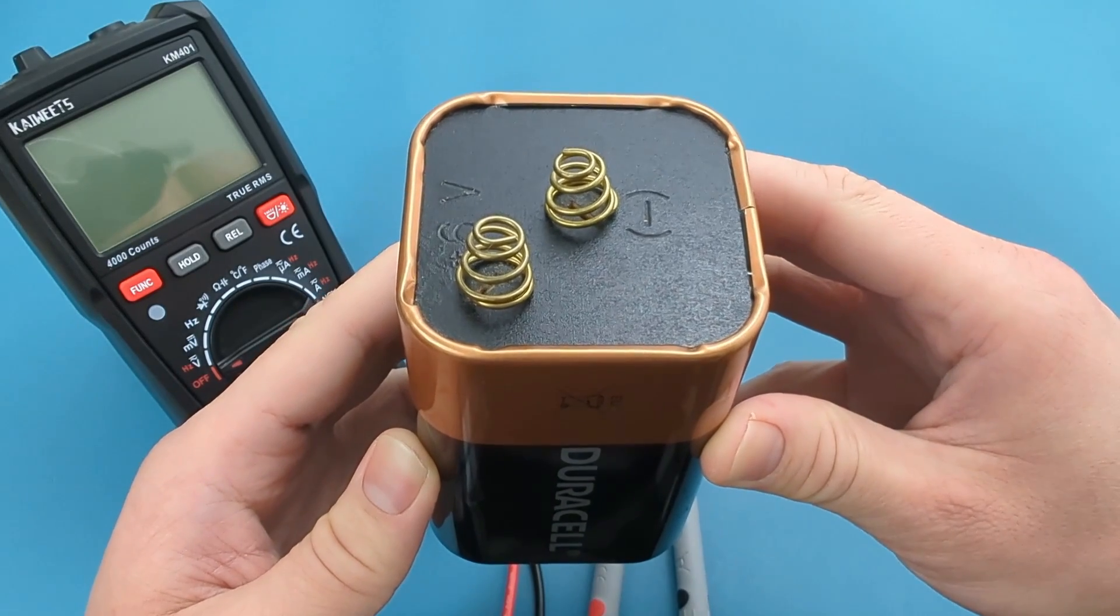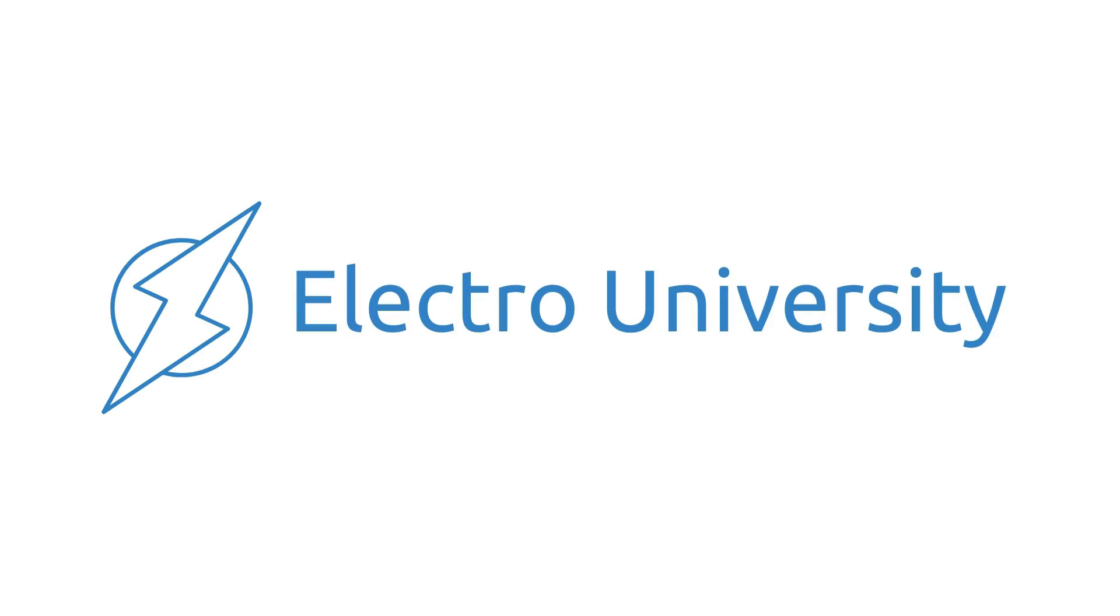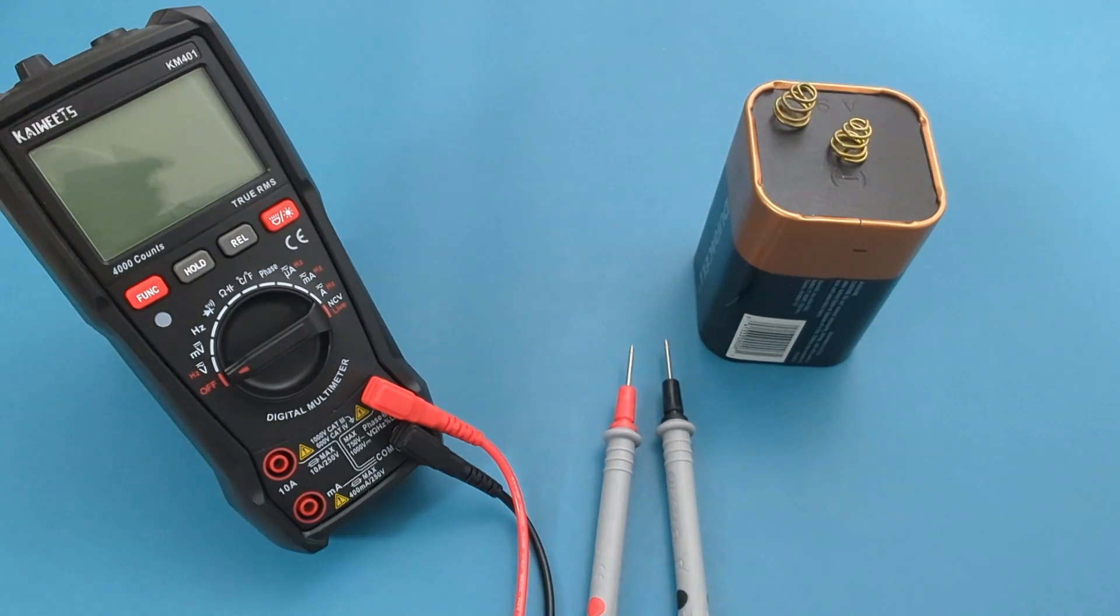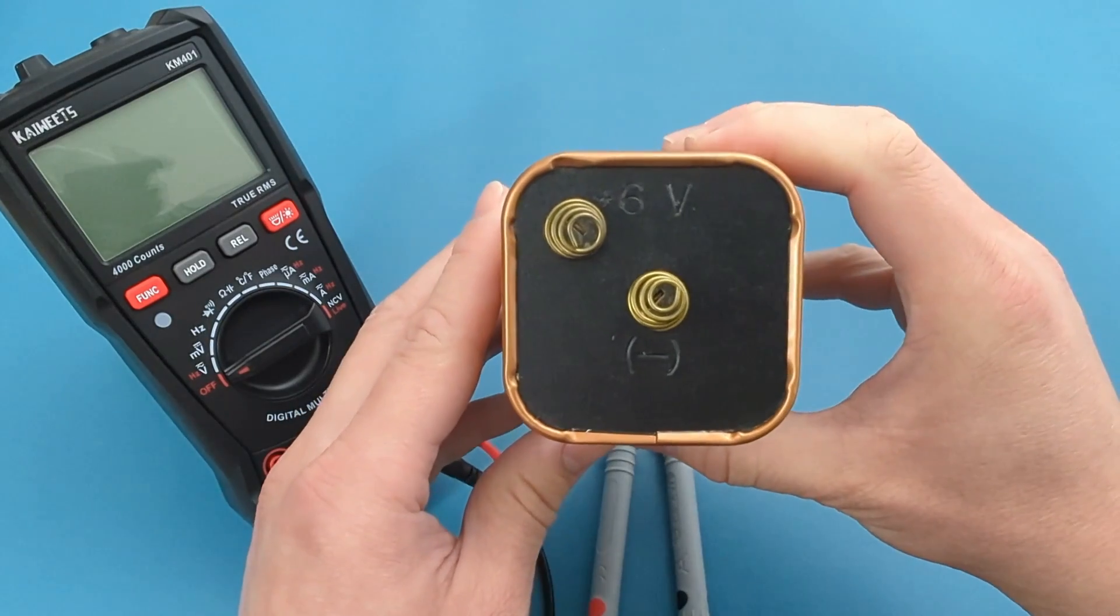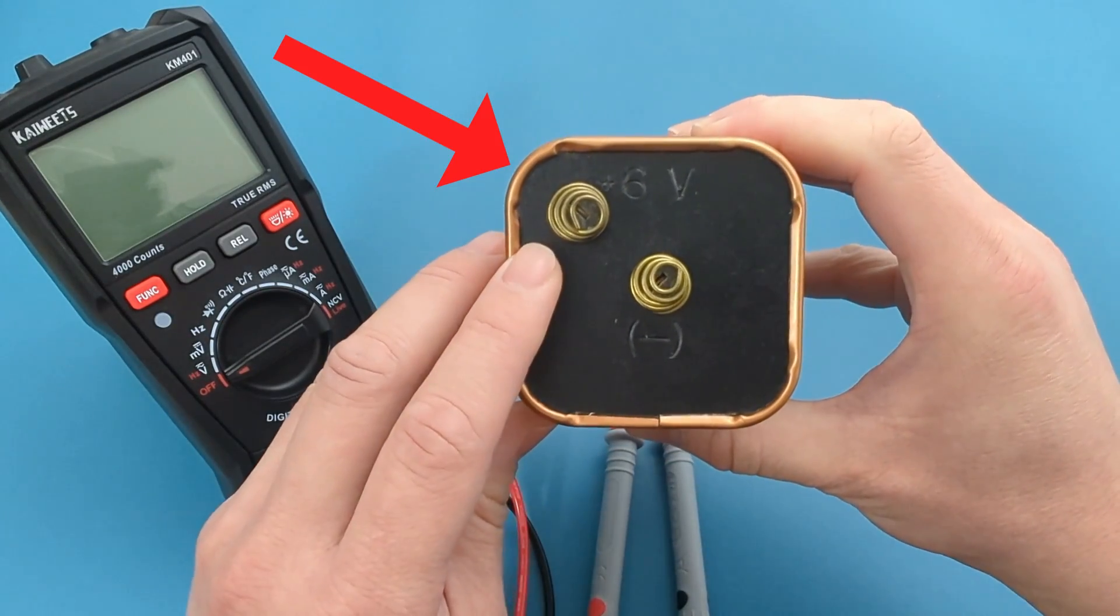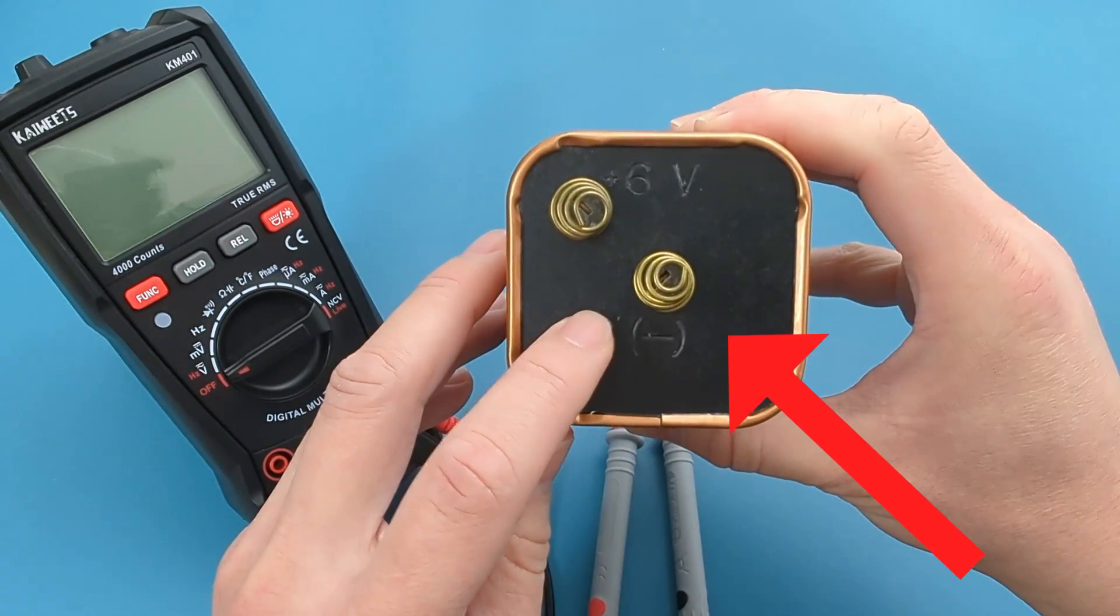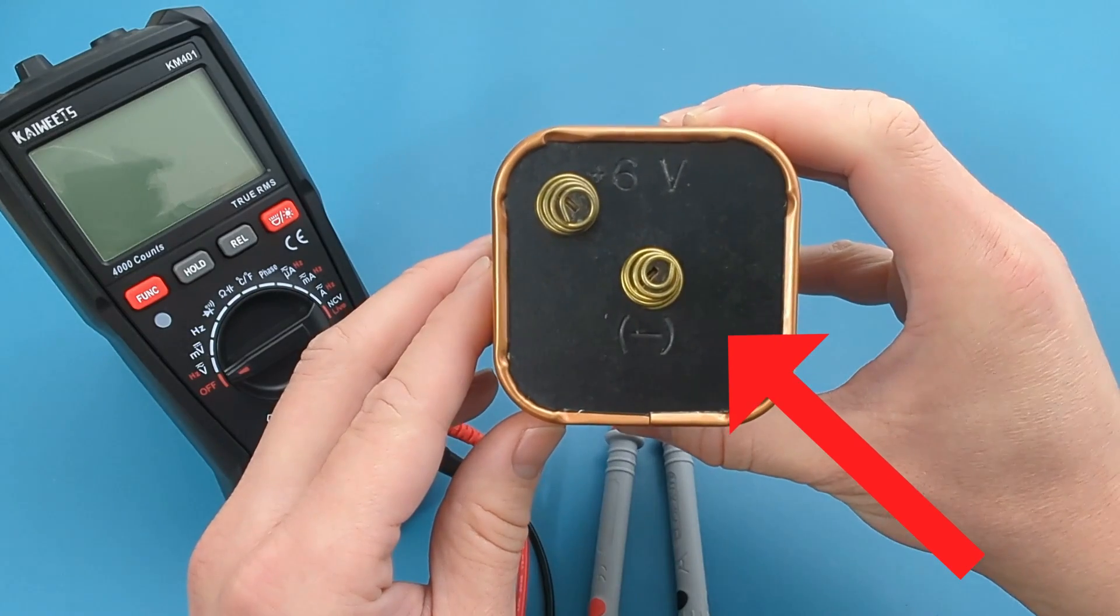How do I test a 6-volt battery? Hey guys! In today's video, I will show you how to test a 6-volt battery with a multimeter. The first thing you want to do is identify the positive and the negative terminals on the battery. The plus sign indicates the positive terminal and the minus sign indicates the negative terminal.